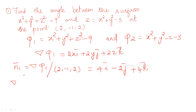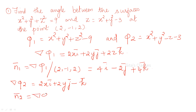And n2 — similarly, what is the second surface? x² + y² − z − 3. So del phi2 is given by 2xi + 2yj − k. So n2-bar is del phi2 at the point (2, −1, 2), substituting x=2, y=−1, z=2, giving 4i − 2j − k.